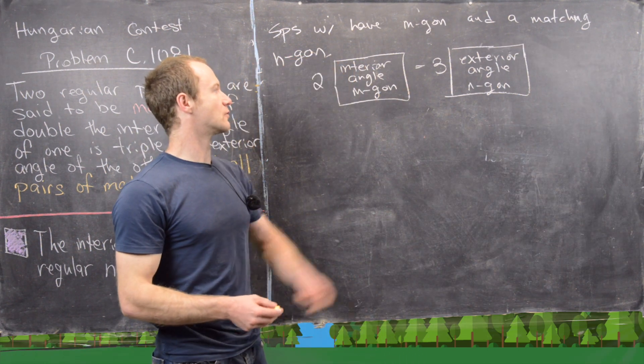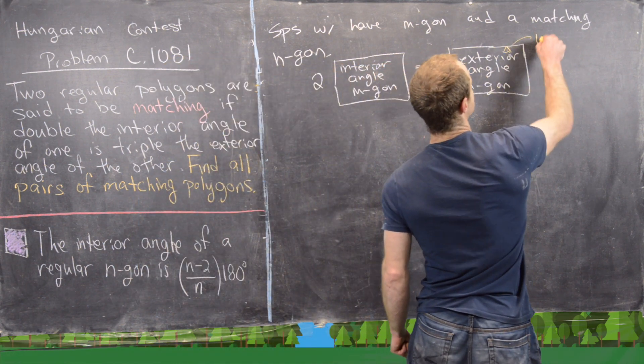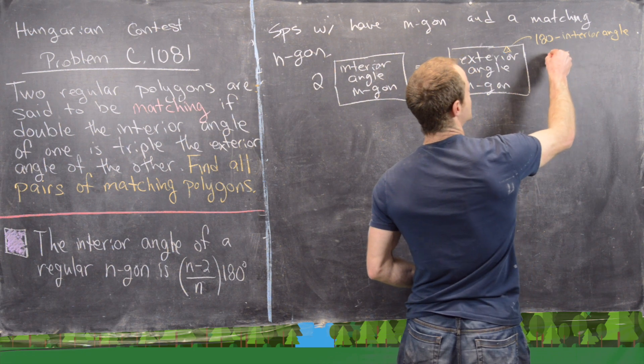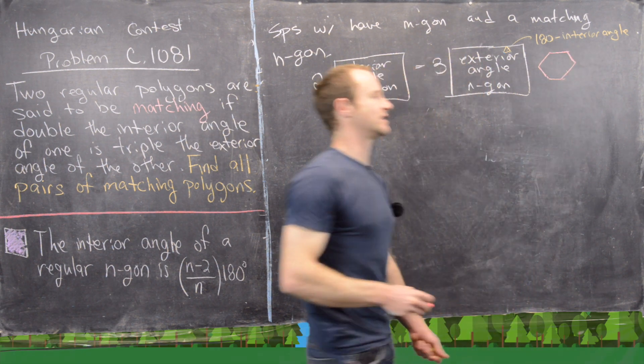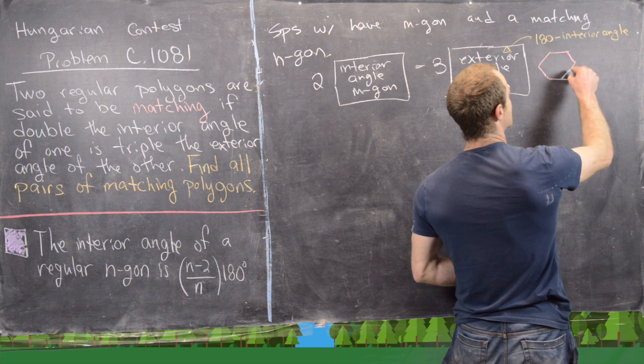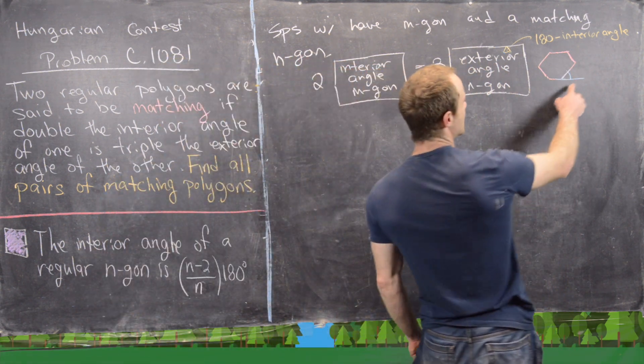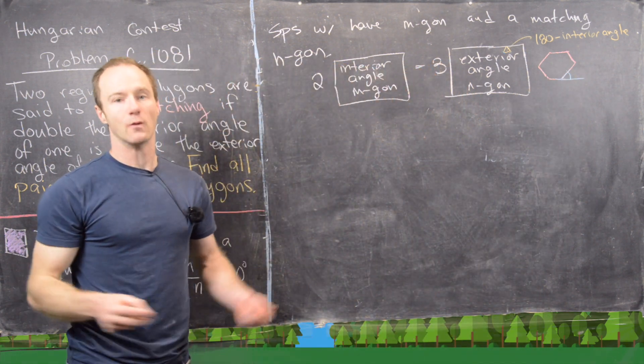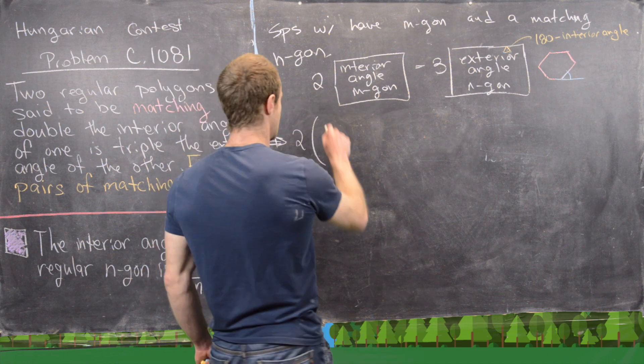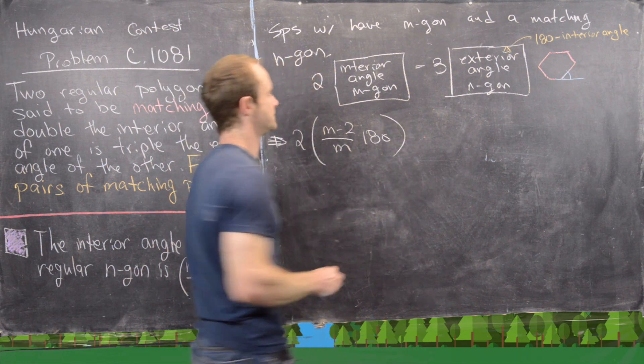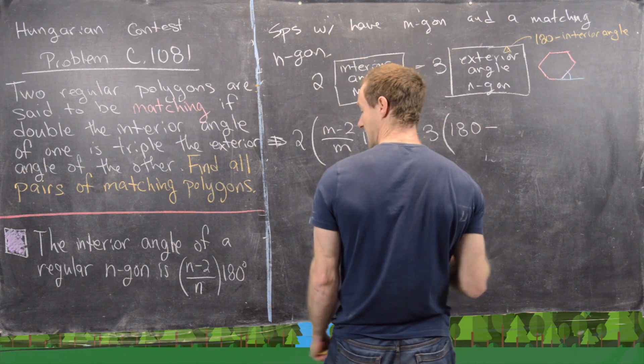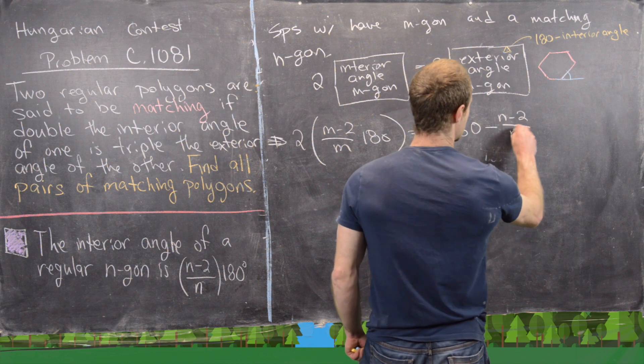But now we can recall how an exterior angle relates to an interior angle. And in fact, an exterior angle is equal to 180 minus the interior angle. We can see that by the following picture, just in the way that an exterior angle is defined. So the exterior angle is this angle which I'm making in blue, which is very clearly supplementary to this interior angle, making it 180 minus the interior angle.